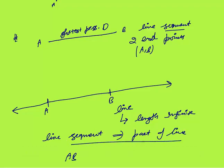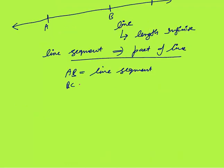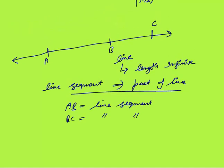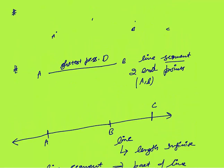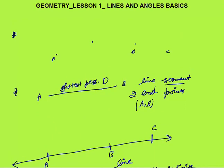AB is a line segment. Similarly, BC is also a line segment. So a line segment is a part of a line. A line is a line segment extending in both directions infinitely, so a line does not have any length. And a point is a dot once you mark with a pen on the paper.